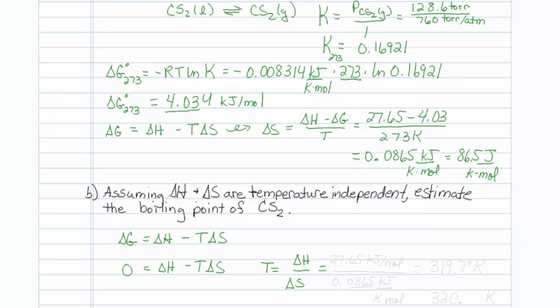I will take my delta H, which is 27.65 kilojoules per mole, and divide by delta S, keeping this in kilojoule units, so 0.0865 kilojoules per Kelvin mole. When I punch that into my calculator, I come up with 319.7 degrees Kelvin. And it looks like WebAssign is looking for degrees Kelvin, so that's good.